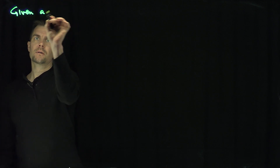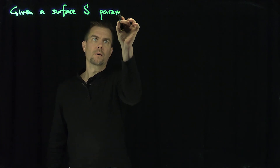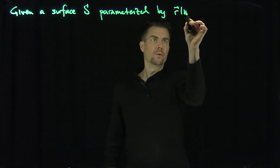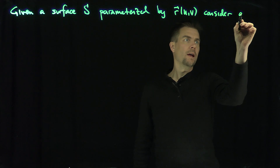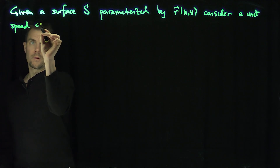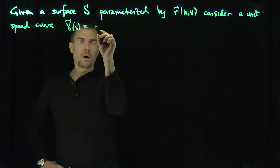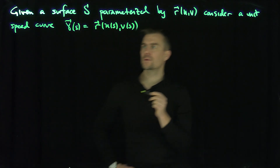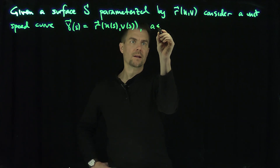Given a surface S parameterized by R of U and V, consider a unit speed curve, which is going to be R of U of S, V of S. So this curve is unit speed and it's on the surface. Let's say S is between two fixed points, so A ≤ S ≤ B, for example.